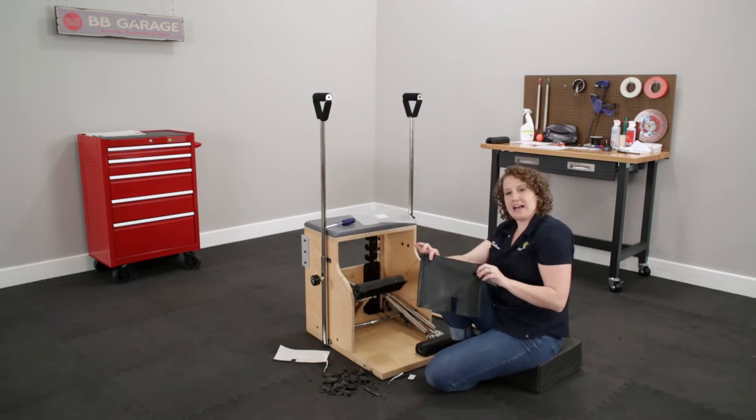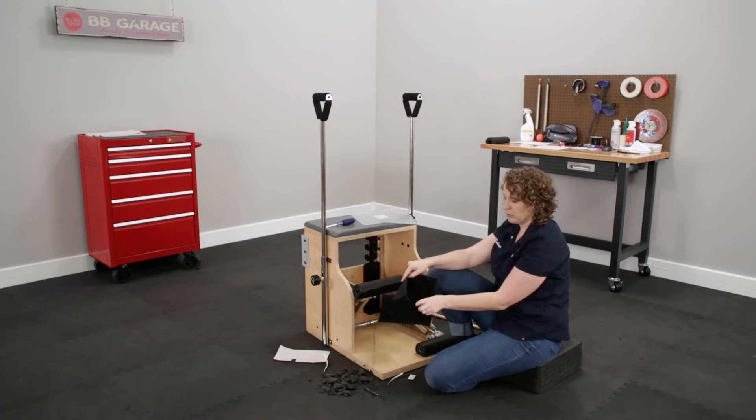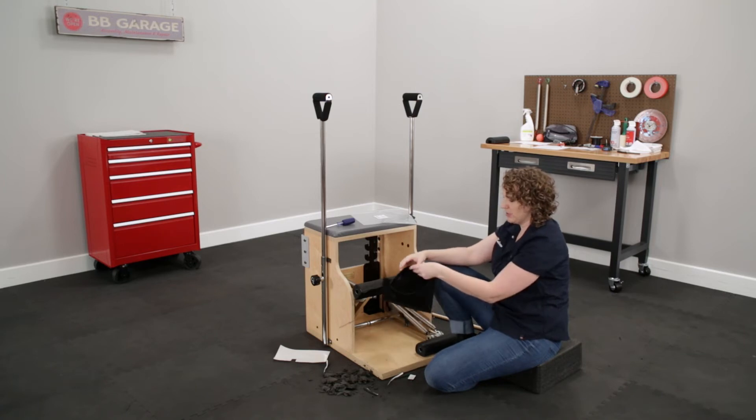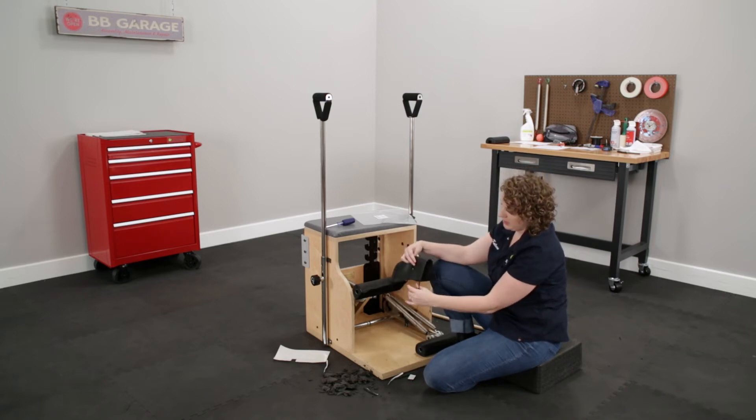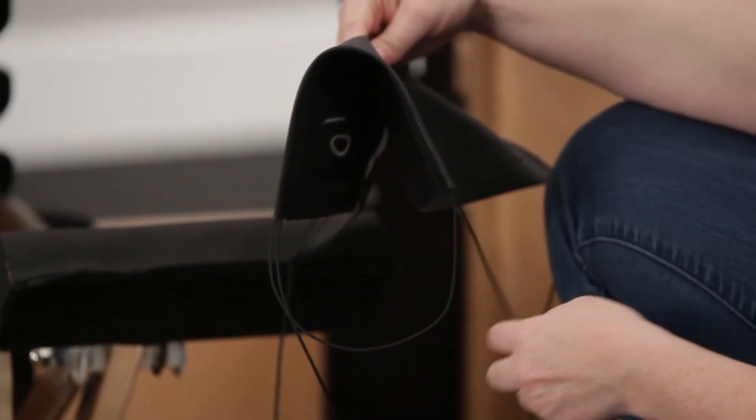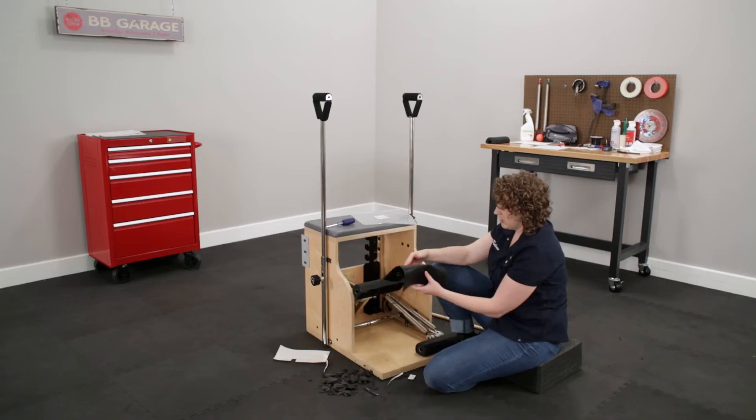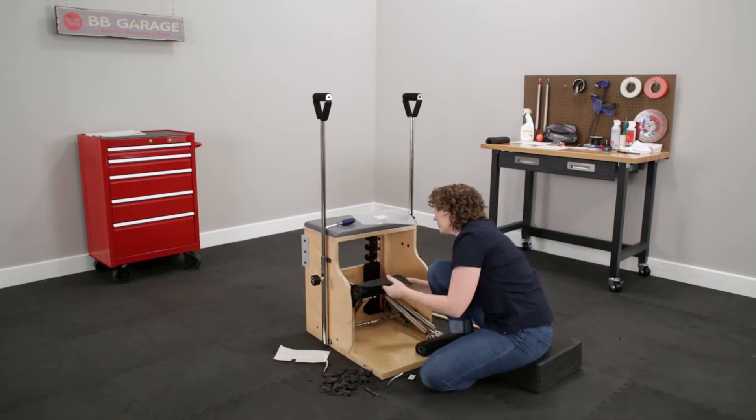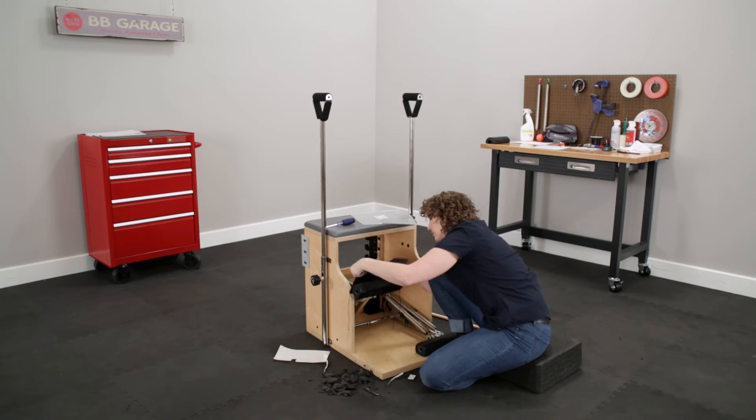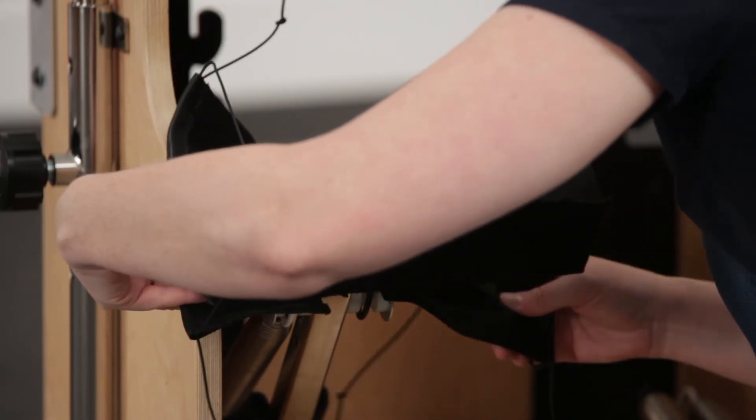This one has a slot in it and it also has the strings pre-threaded, so you'll see on either side the strings make a nice loop here. So we want to preserve this loop. So let's go ahead and drape it over, being careful not to snag the velcro because that will get things hung up.